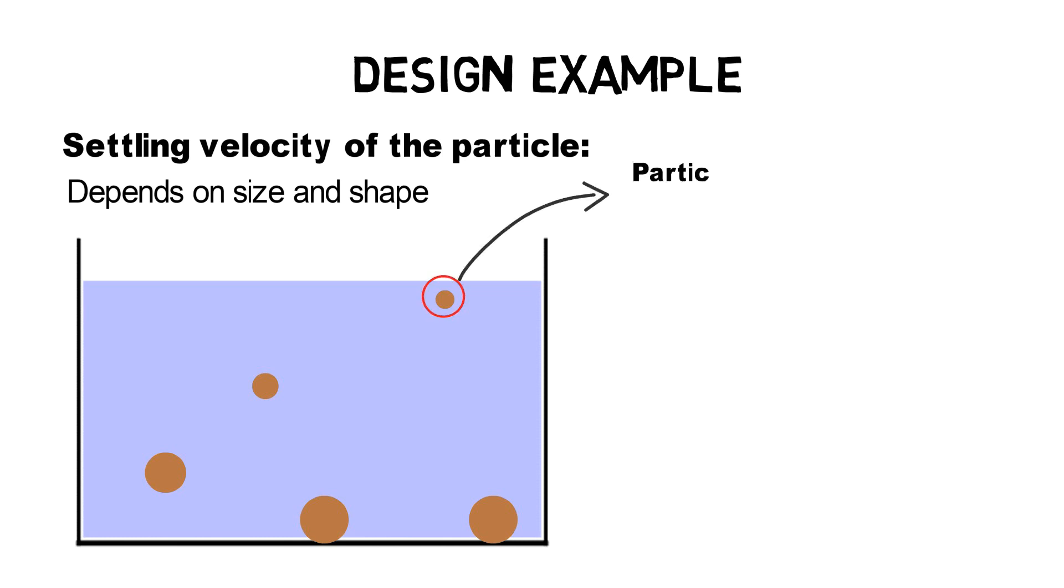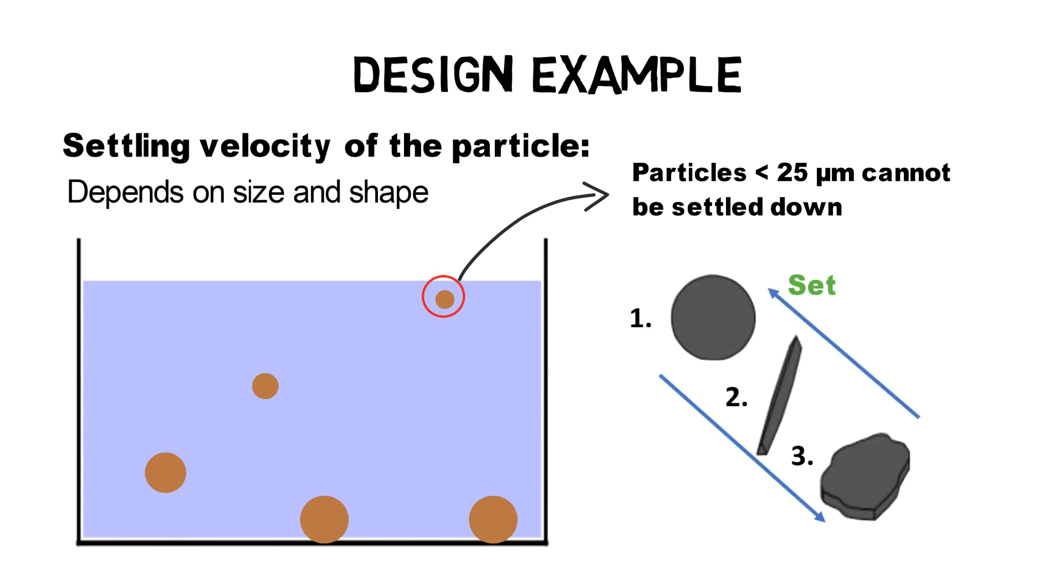Particles which are smaller than 25 micrometers can usually not be settled down at all because drag forces, turbulences, rising particles and others within the sedimentation basin are bigger than the particle settling force. Also, spherical shaped particles settle better than flat shaped particles as their form offers less contact area for drag forces.